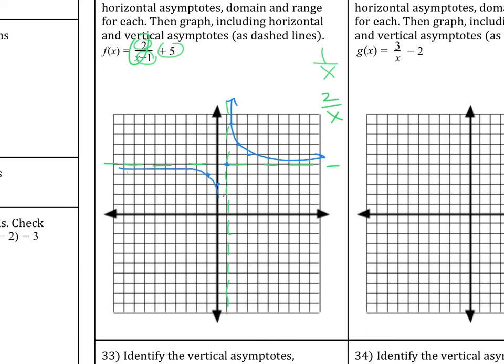So the branches do not hit those asymptotes. And here is your graph. So our domain is all real numbers except when x equals 1, right? We cannot have, x cannot equal 1. And then the range is all real numbers except y cannot equal 5.